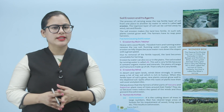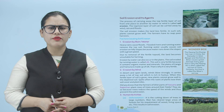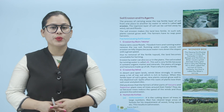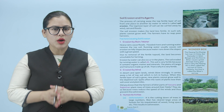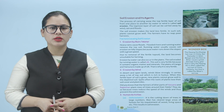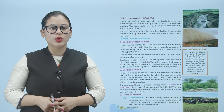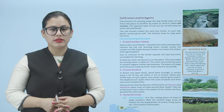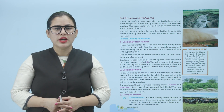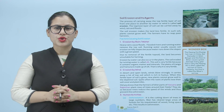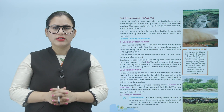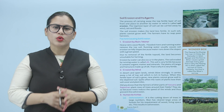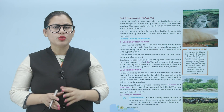Soil erosion and its agents: the process of carrying away the fertile layer of soil from one place to another by water or wind is called soil erosion. The topmost layer of soil can be carried away by wind, rain, and floods. Soil erosion makes the land less fertile and plants cannot grow well; farmers have to reap poor harvest. Erosion ka matlab kya hota hai: jo aapki topsoil jo bohot fertile hoti hai, agar wo remove ho jaaye, to yeh aapka soil erosion hota hai.